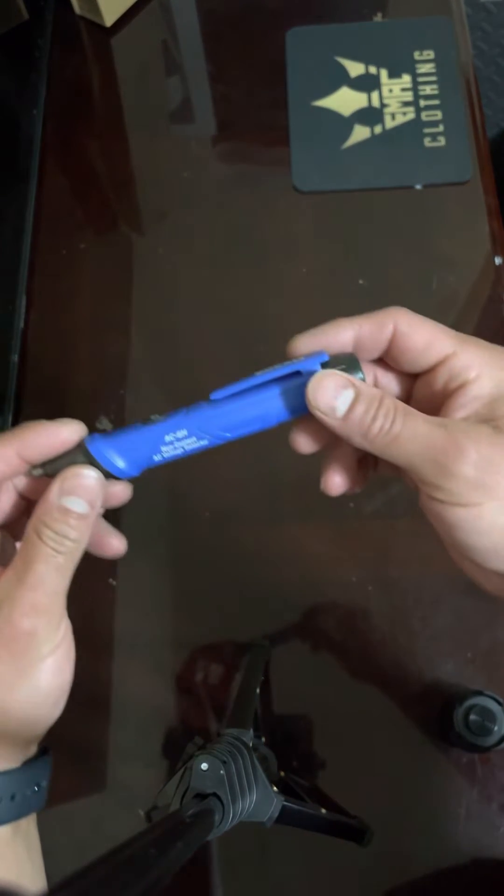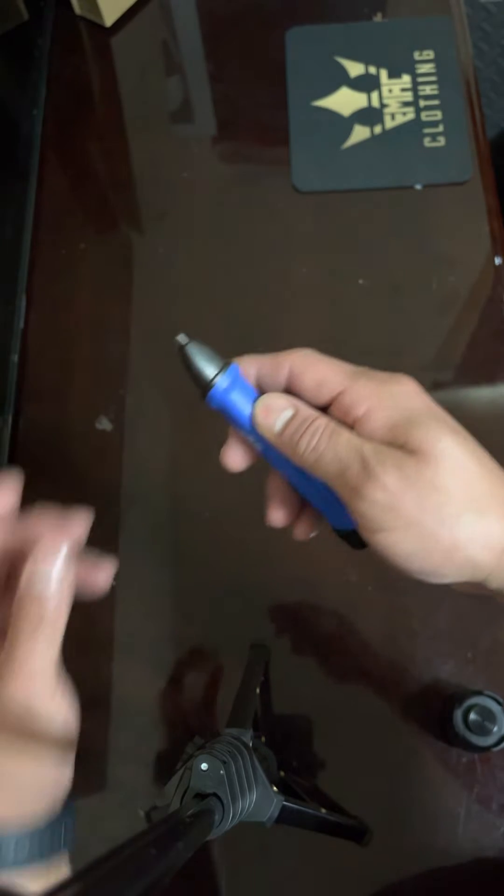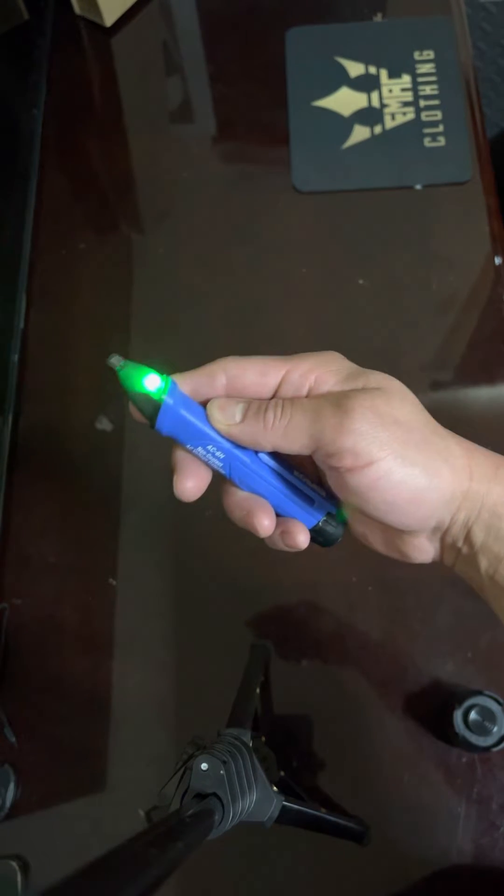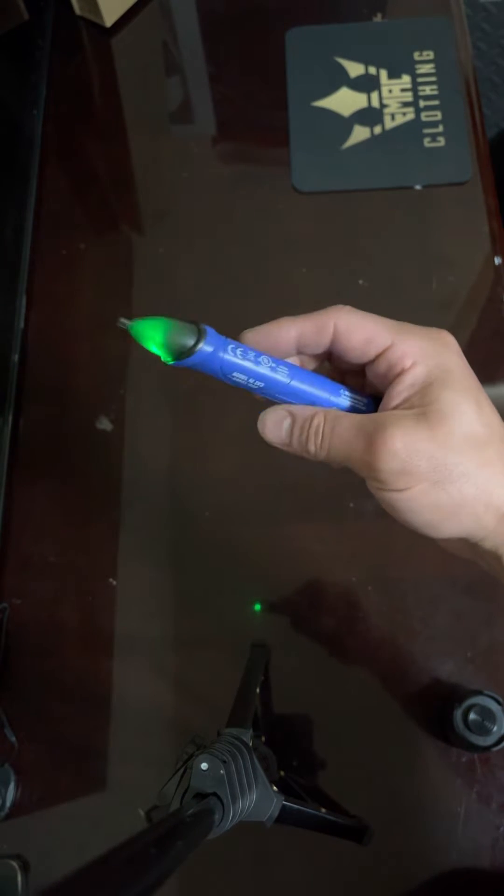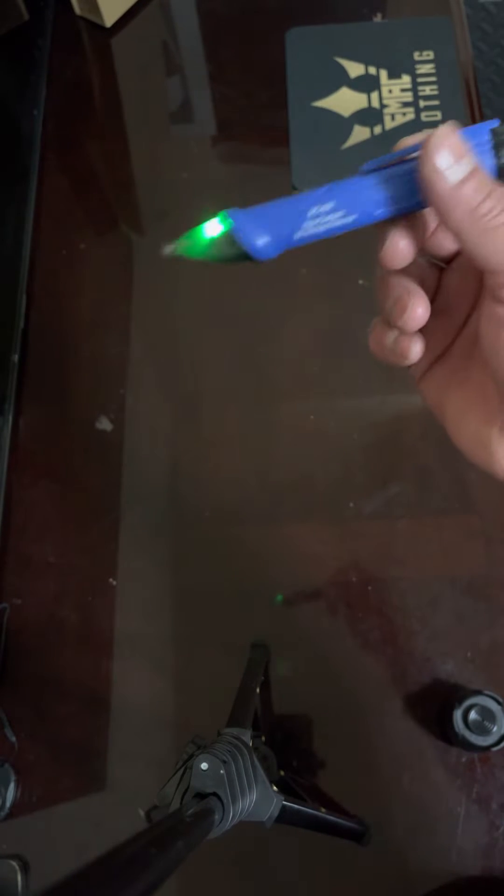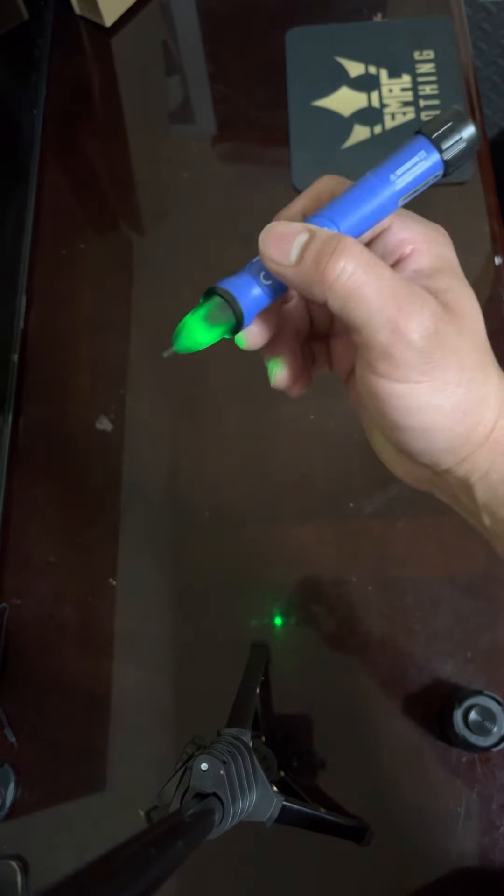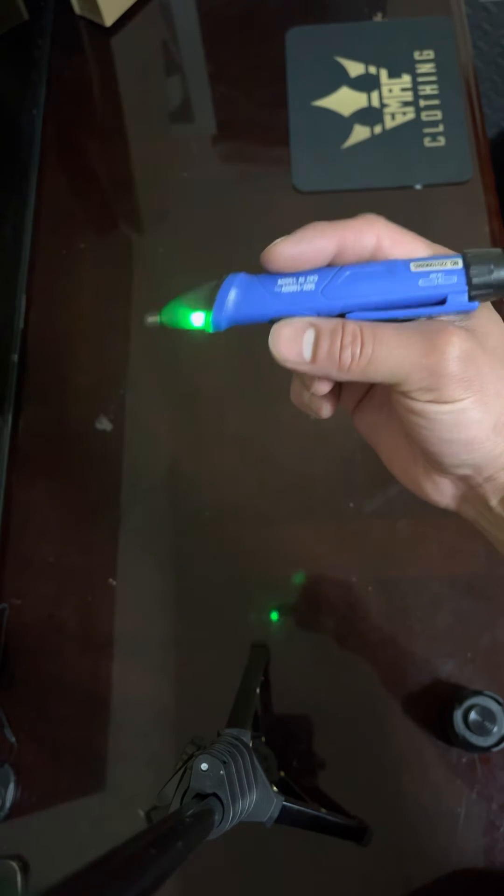All right guys, welcome to another video. This is the Kobalt non-contact AC voltage detector. We got this at work; we're doing some electrical work and want to see if there's any voltage around. Basically, it's green unless you get it close to AC voltage, and then it turns red.